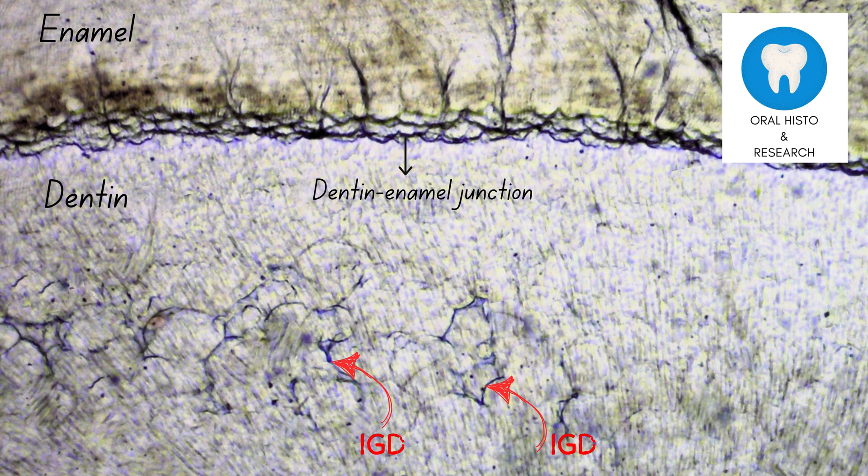Hello! Welcome to this video about interglobular dentin, or IGD. The IGD could be defined as a hypomineralized or hypocalcified area in dentin. The mineralization of IGD could range from none to being slightly mineralized.